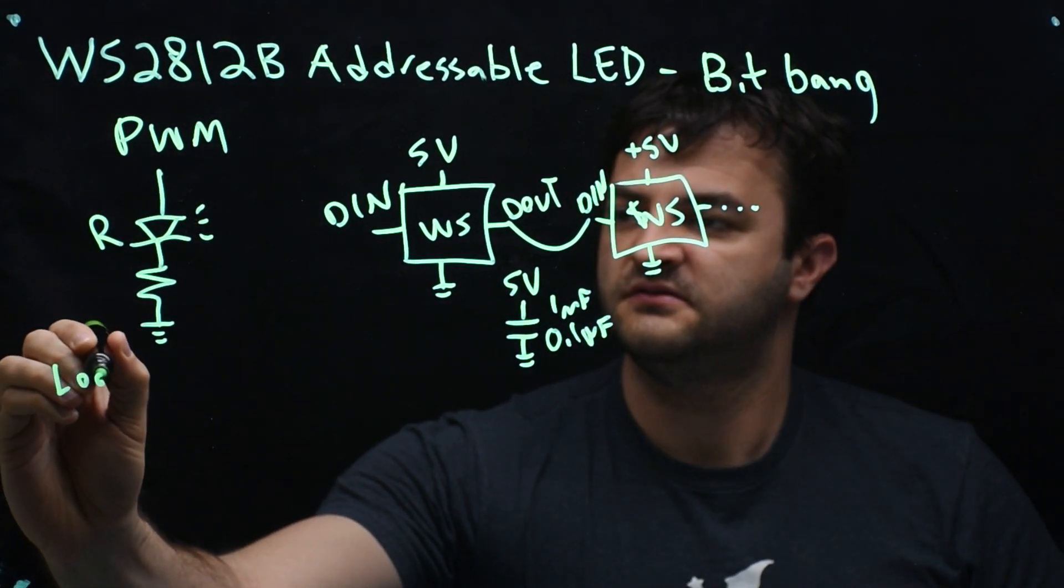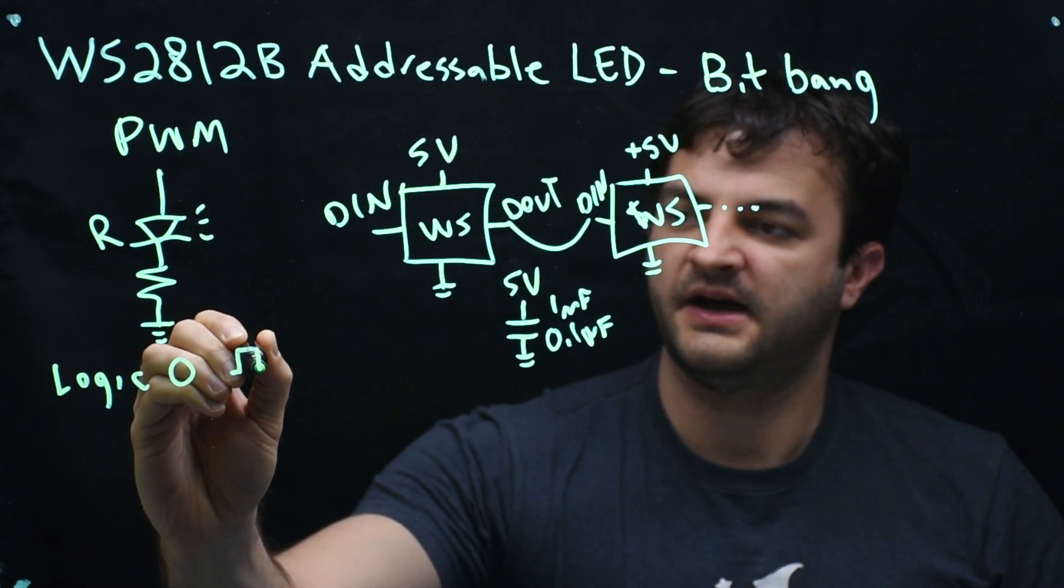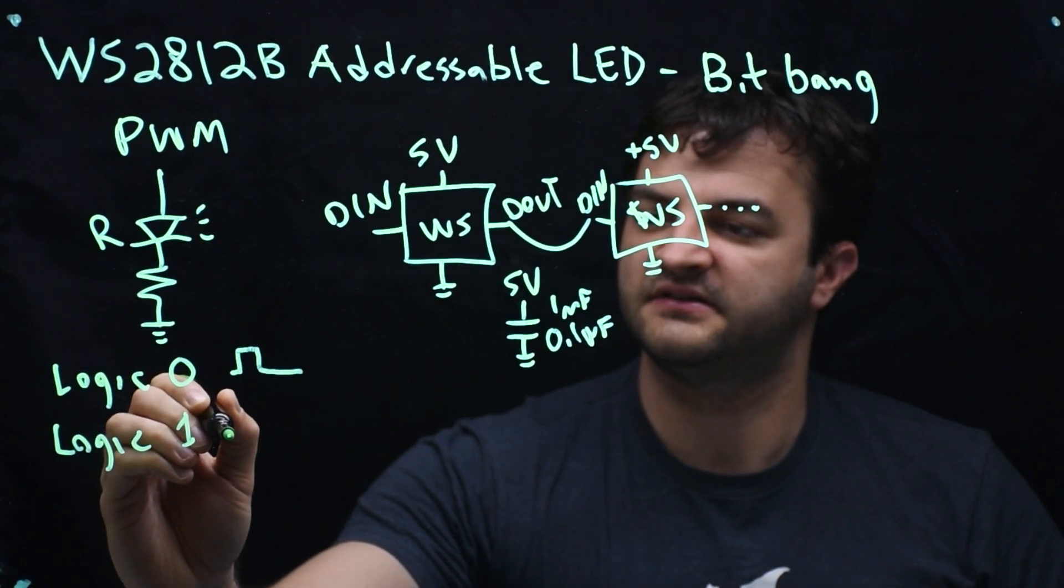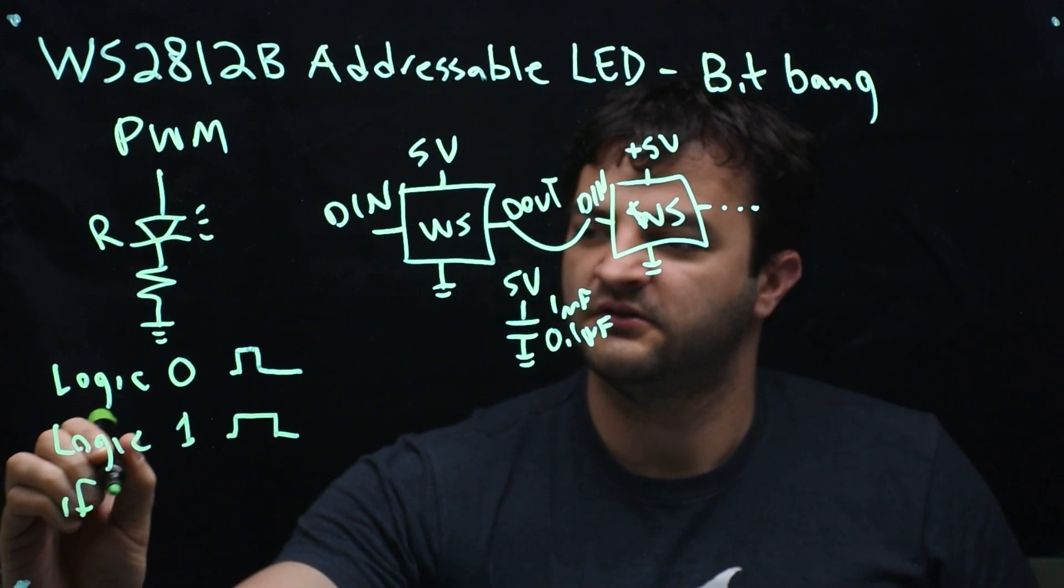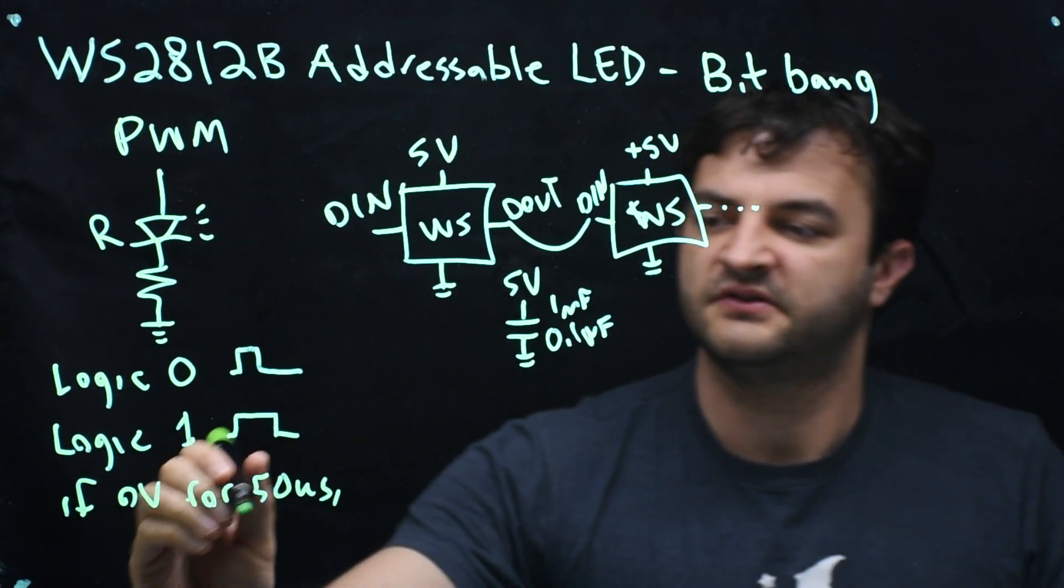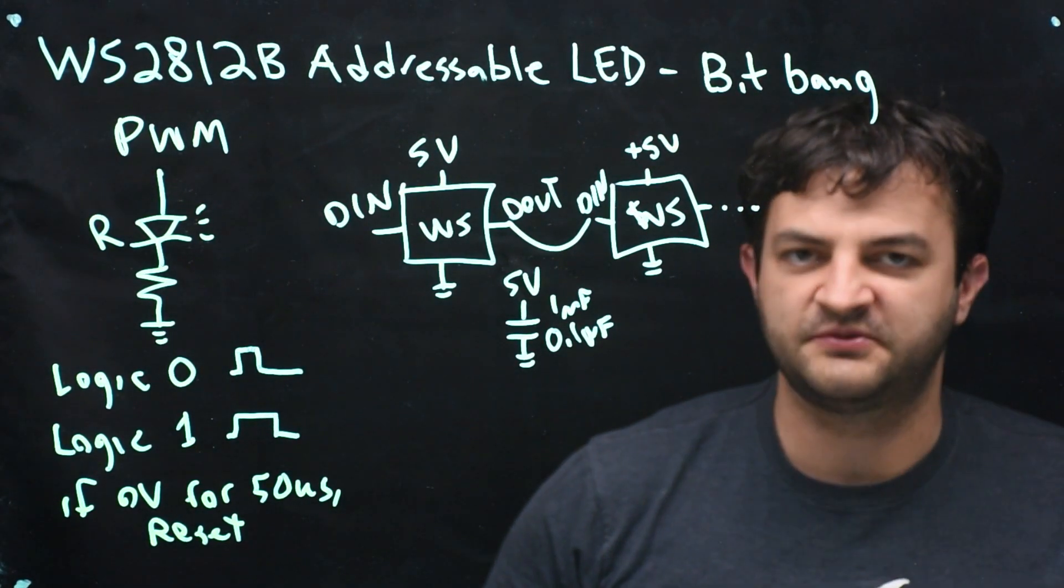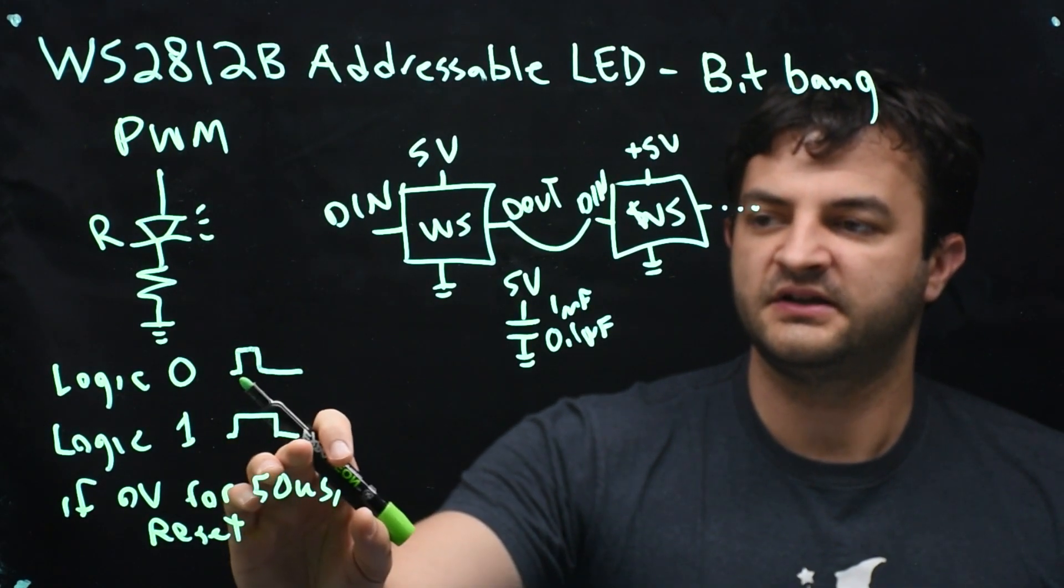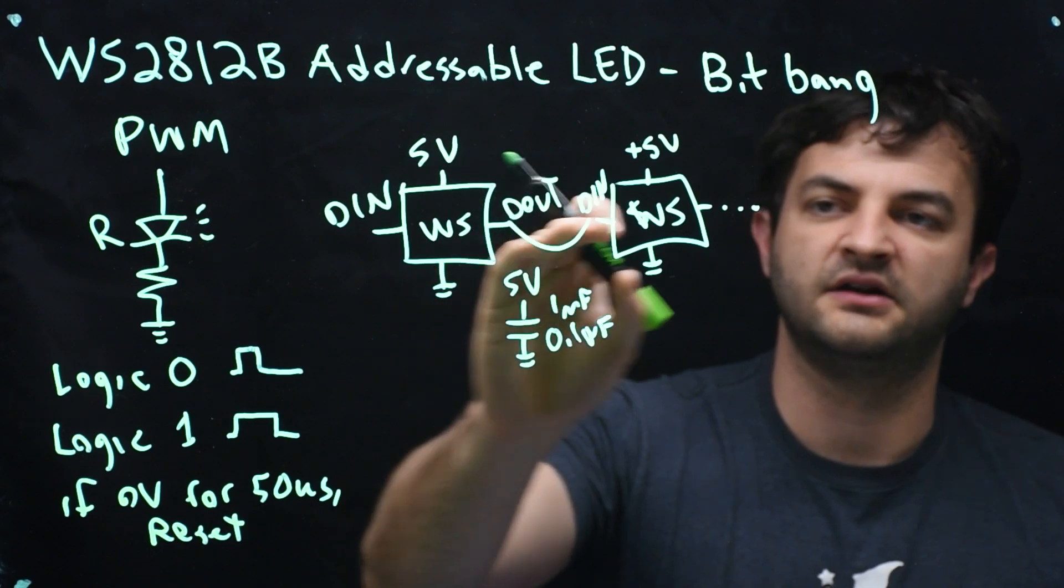We have a logic 0, which is going to be a relatively short high pulse and a longer low pulse, and a logic 1, which is the opposite. It's a longer high pulse and a shorter low pulse. The reason for this is if you have 0 volts for 50 microseconds, the chip starts over. That's the reset condition. So if we have four chips in a row, we need to send 24 bits to each chip. If after that 24th bit we hold the line low for 50 microseconds, the next 24 that we send would start over at the very beginning of the line of all of our chips.